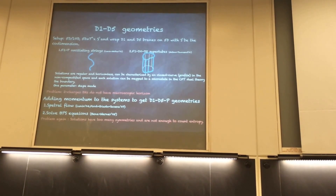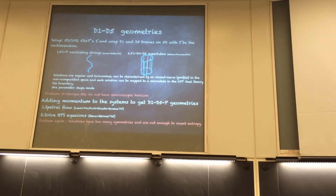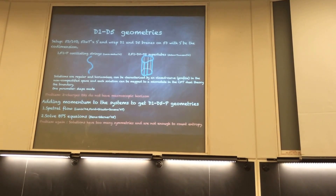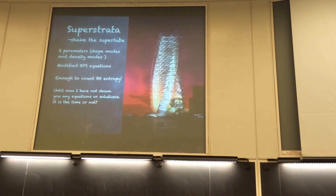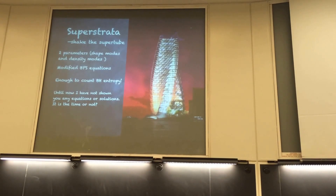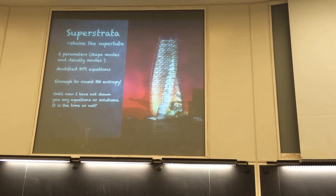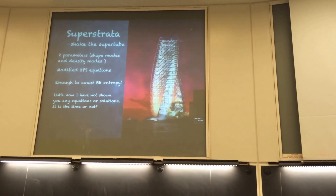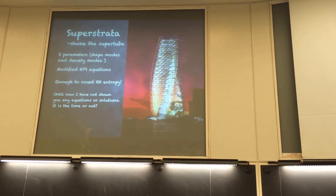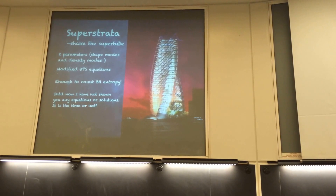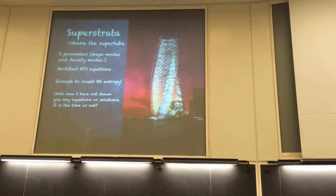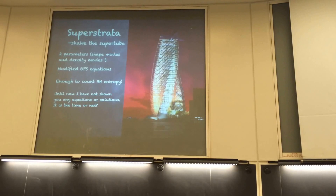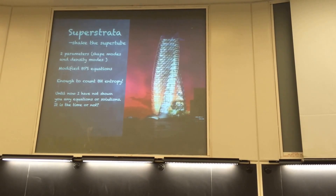Bena and Warner conjectured that in six-dimensional space, there is another object called the superstratum. The idea is that we shake the supertube, and this kind of solution will be parametrized by two parameters — one is a spin mode, the other is a density mode. Again, there will be new BPS equations to solve. The idea is that if you find such solutions, they account for the black hole entropy.